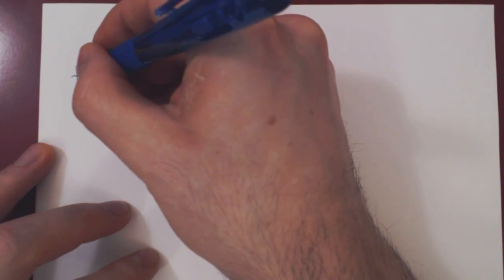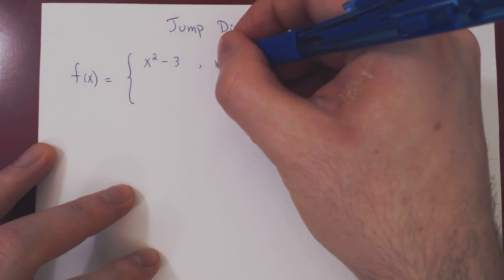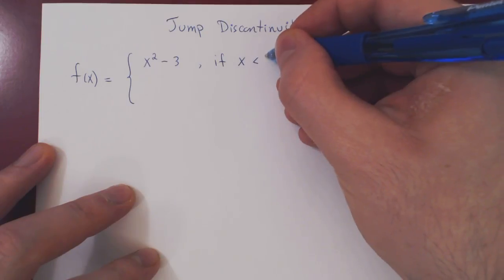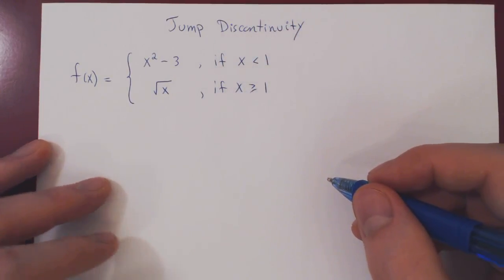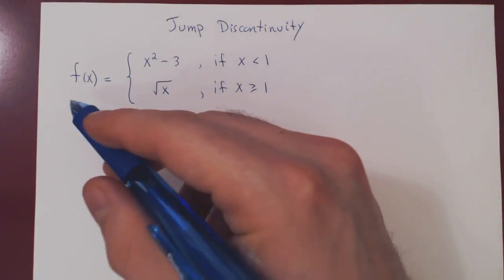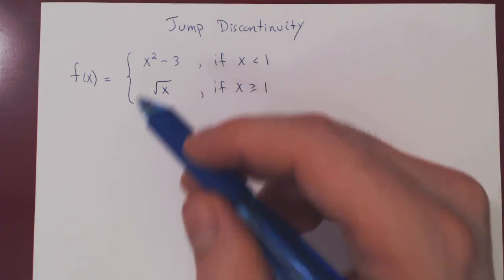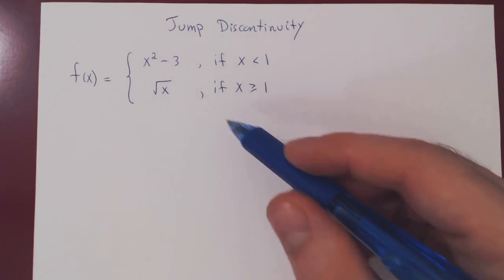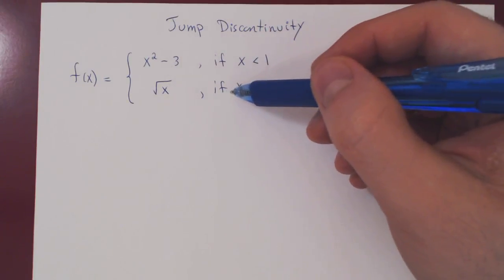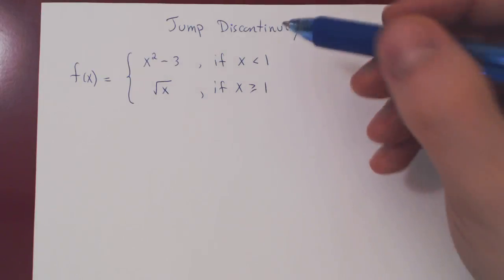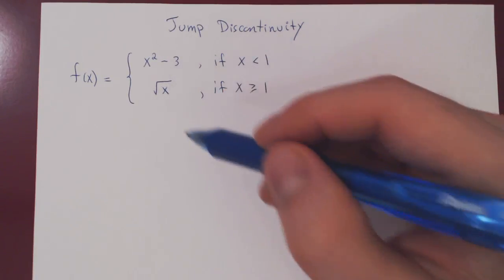Here's our first example. We'll take a piecewise function: f of x equals x squared minus 3 if x is strictly less than 1, and f of x equals the square root of x if x is greater than or equal to 1. I claim that this function has a jump discontinuity at x equals 1. Both functions individually — x squared minus 3 is a polynomial, continuous everywhere, and root of x is also continuous on its domain — are continuous on their respective pieces.